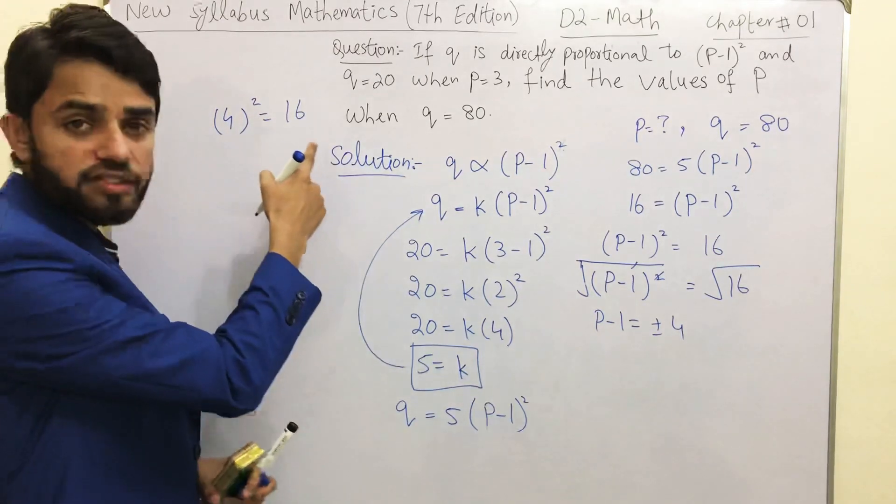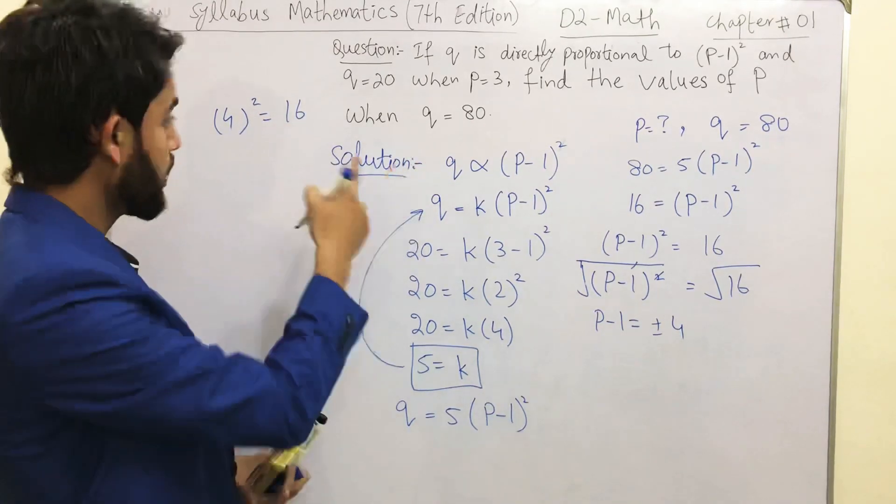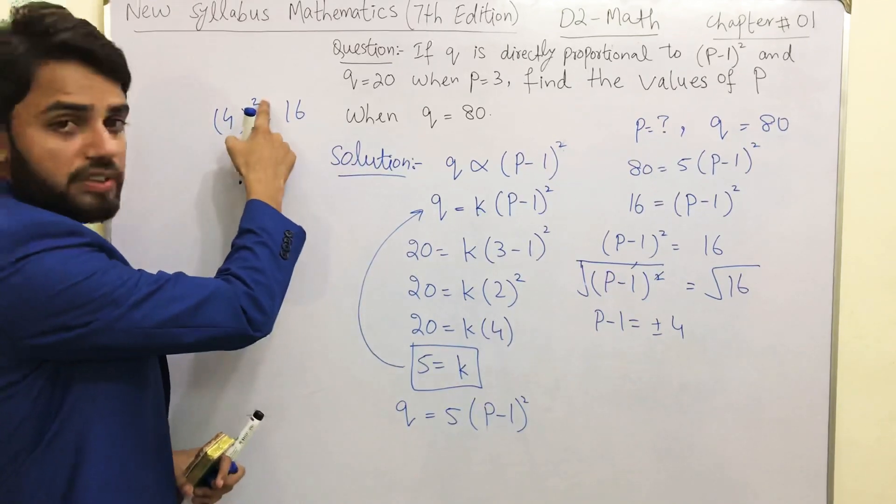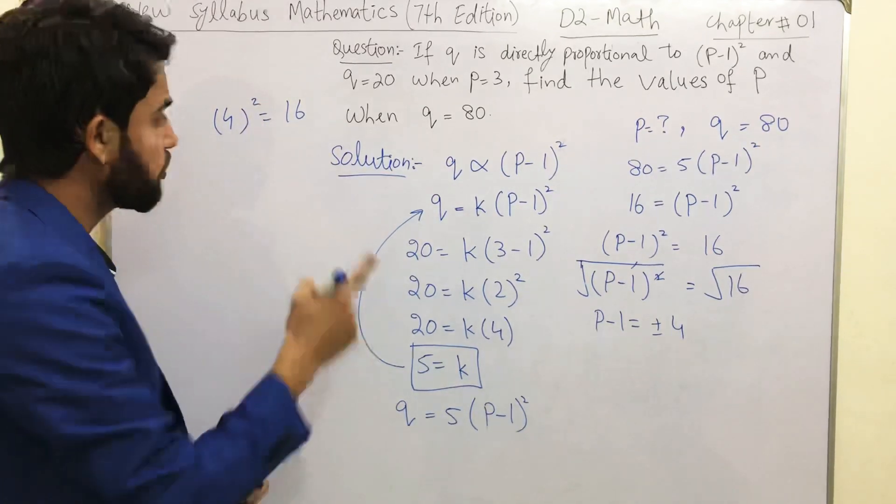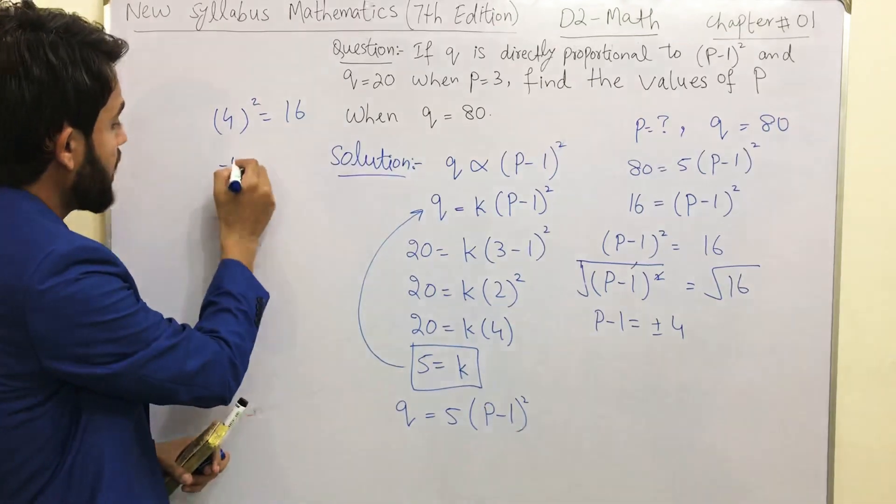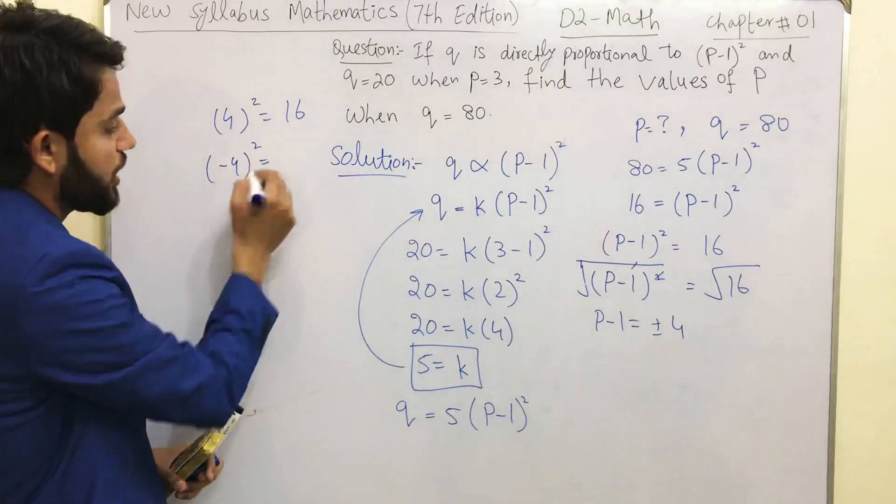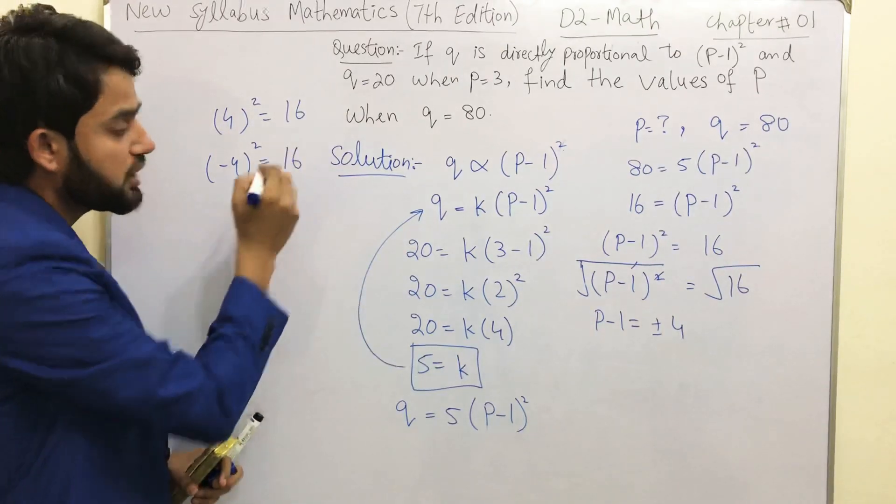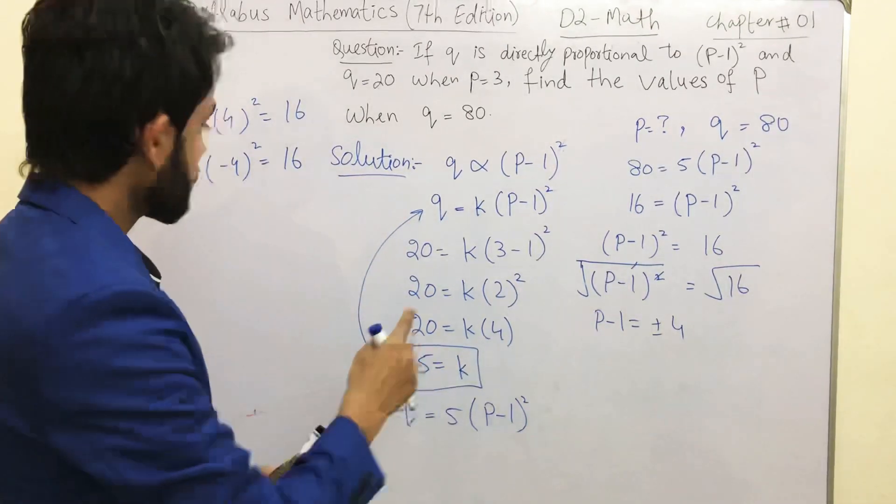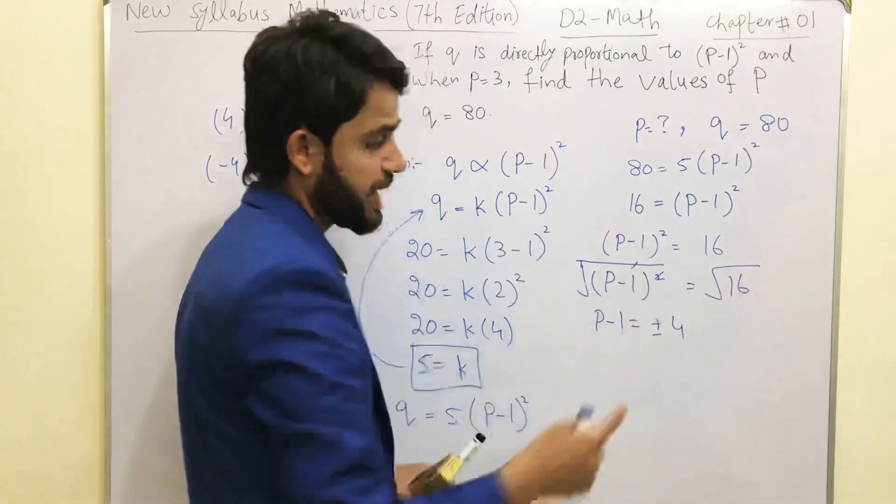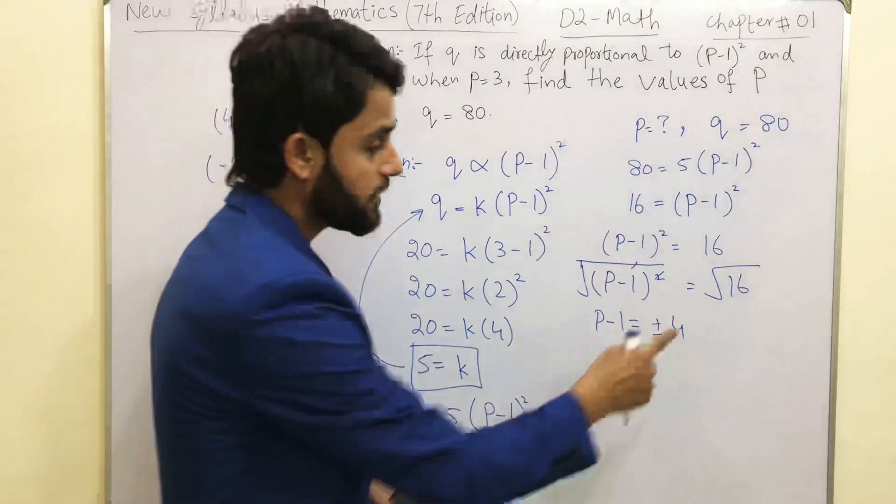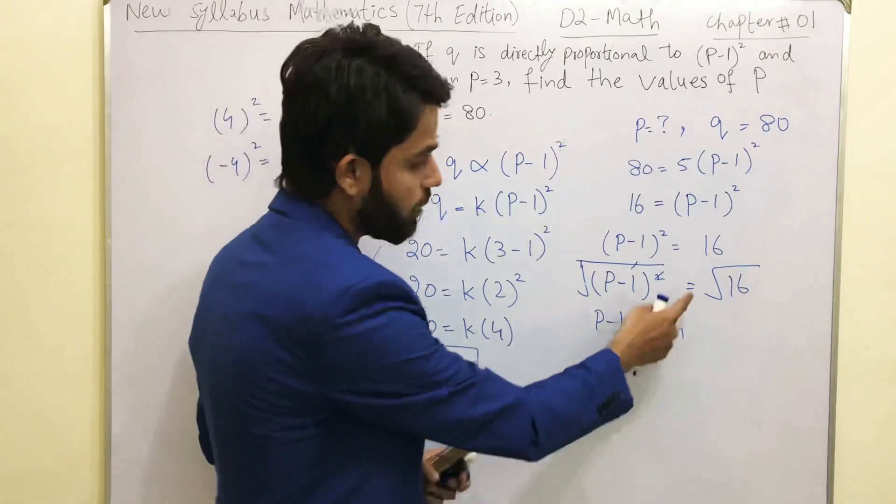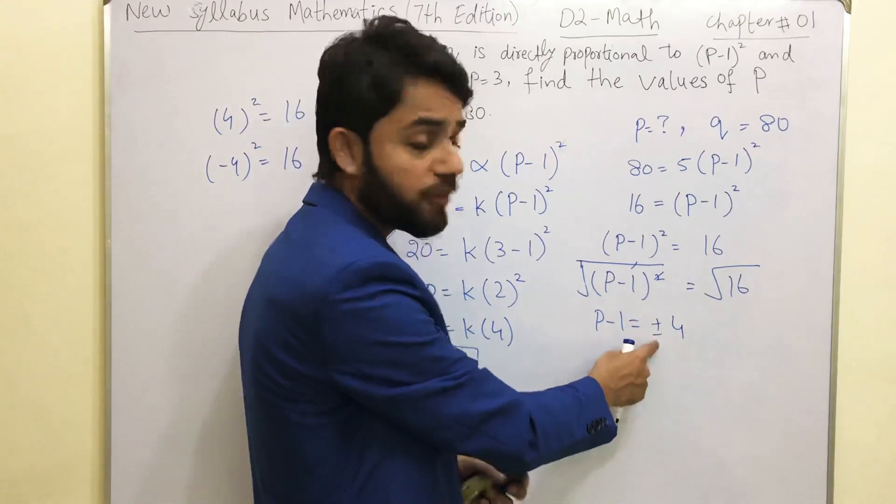4² is going to give you 16 because 4 times 4. Whatever number you have over here, you need to multiply there. 4² means that you need to multiply 4 two times: 4 times 4 equals 16. And if you have -4² over here, then -4 multiply by -4 is also going to give you 16. So we are not sure yet that this 16 is being made up of +4² or -4². So we are not sure, that's why once we remove this square root sign we have to write plus minus both values.